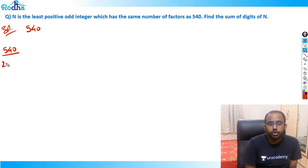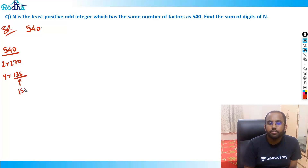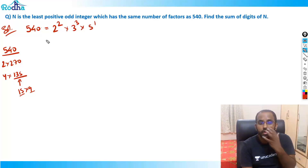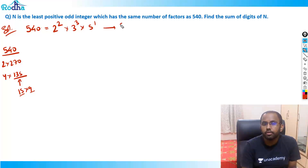540 equals 2 × 270, then 4 × 135. What is 135? It's 15 × 9. So 540 = 2² × 3³ × 5. In 540, 2 occurs twice, 3 occurs three times, and 5 occurs once. The number of factors is (2+1)(3+1)(1+1) = 3 × 4 × 2 = 24 factors.